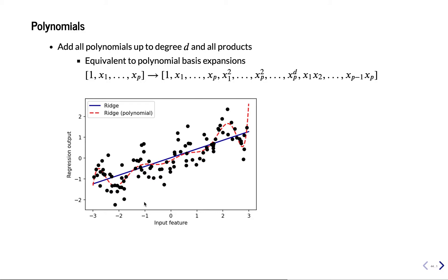The first method is polynomial features. This is exactly the same as we've seen in kernelization — if you use a polynomial kernel, this is basically what happens. You take your original features x1 to xp, we'll add a one at the beginning just to make the transformation easier. Then for each feature we include the original ones, and we add all the squares of all the features — we take all the values of feature 1 and square them to get x1 squared.